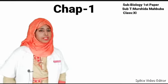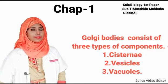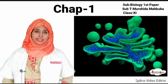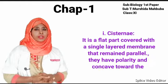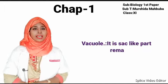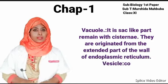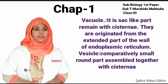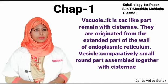Golgi bodies consist of three types of components: cisternae, vesicles, and vacuoles. Cisternae are flat parts covered with a single-layered membrane that remain parallel and concave towards the nucleus. Vacuoles are sac-like parts that remain associated with cisternae, originated from the extended part of the wall of the endoplasmic reticulum, assembled together with cisternae.